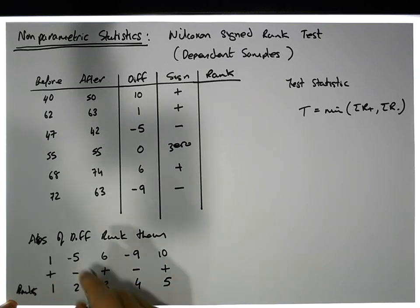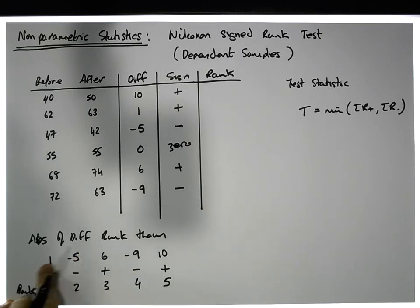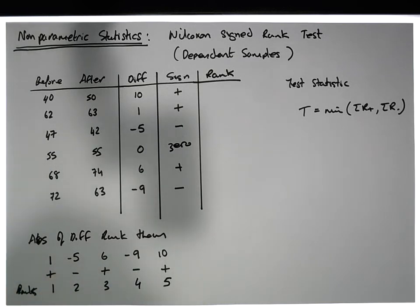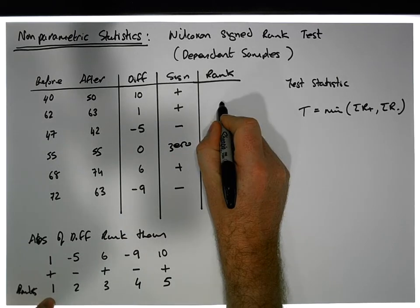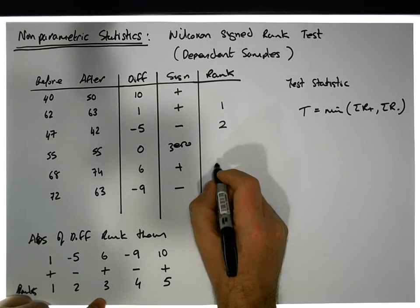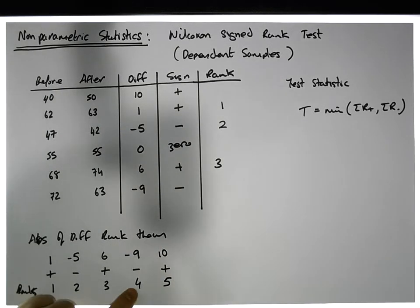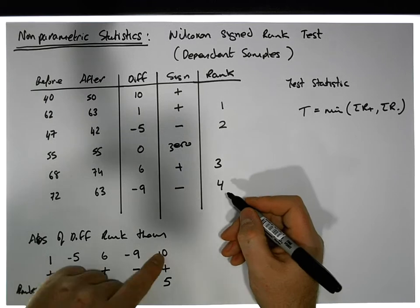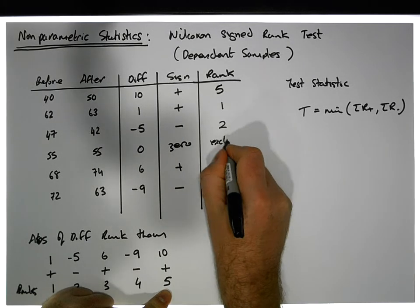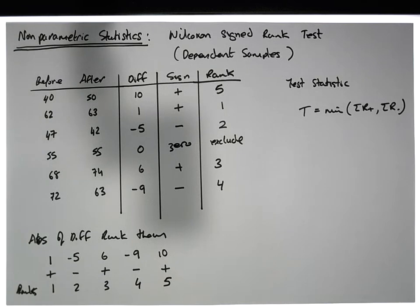We order these from smallest to largest and assign ranks 1 through 5 — there are no ties in the absolute values. So: the value 1 gets rank 1, minus 5 gets rank 2, 6 gets rank 3, minus 9 gets rank 4, and 10 gets rank 5. We exclude the zeros from this ranking.